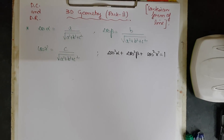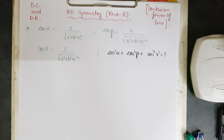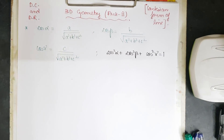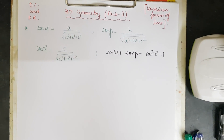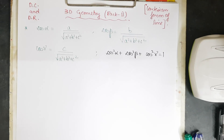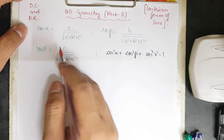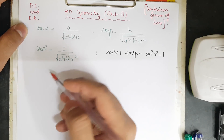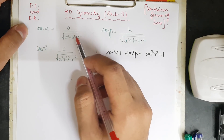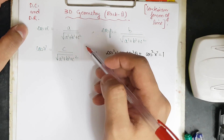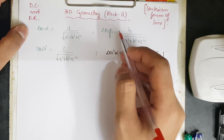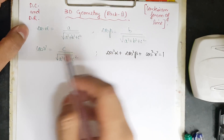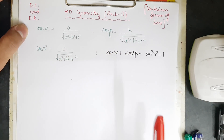Hi everyone, welcome to the second part of 3D geometry. In this video I shall be dealing with direction cosines (DCs), direction ratios (DRs), and the Cartesian form of the straight line. From the previous video we learned that cos α equals a divided by √(a²+b²+c²), cos β and cos γ similarly defined.